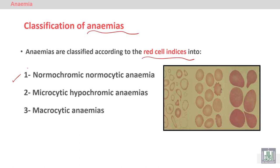The three types are: normocytic normochromic anemia, seen in the middle with normal-sized cells; microcytic hypochromic anemia, seen to the left with small, pale red cells showing anisocytosis — variation in volume and shape; and macrocytic anemia with a very large MCV, showing large red blood cells which can be compared with normal and microcytic cells.